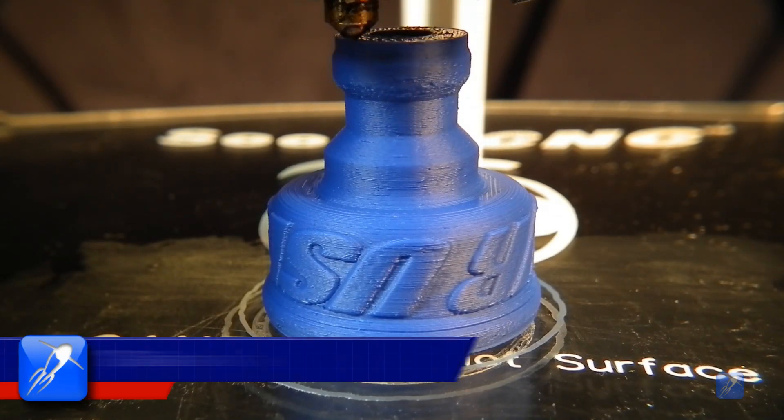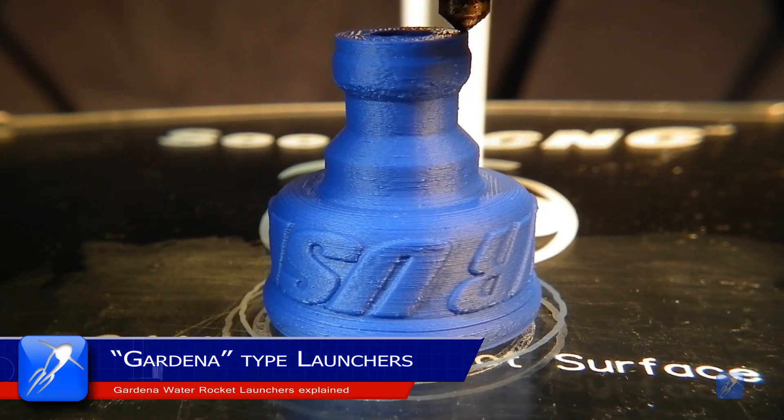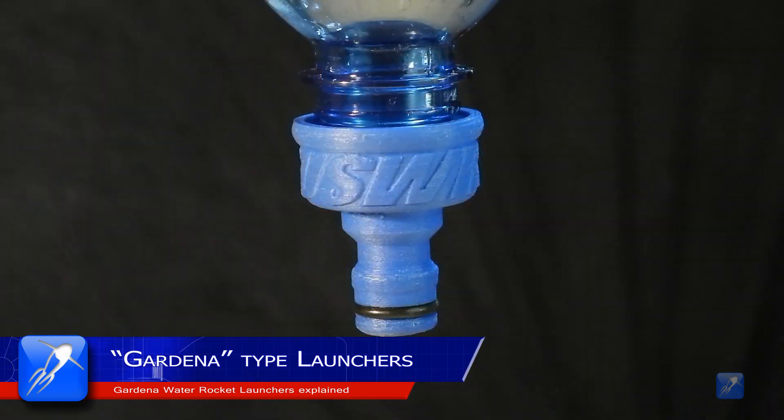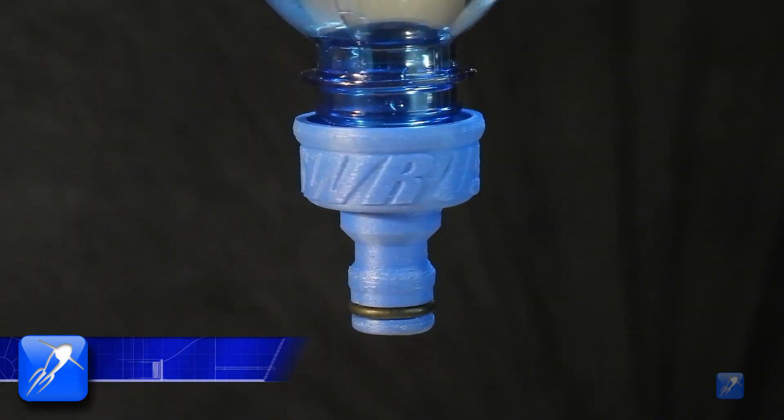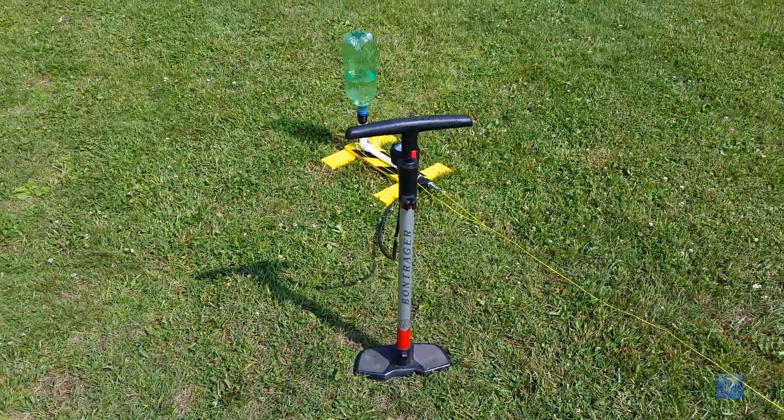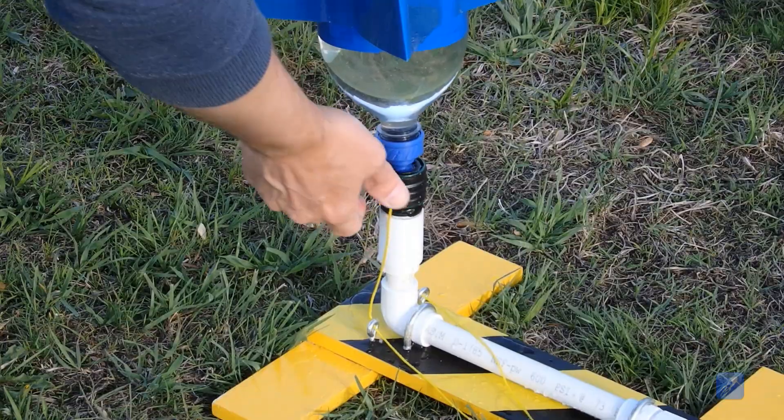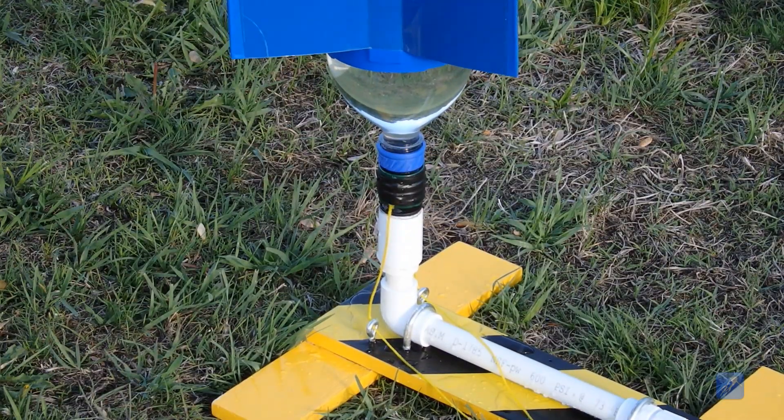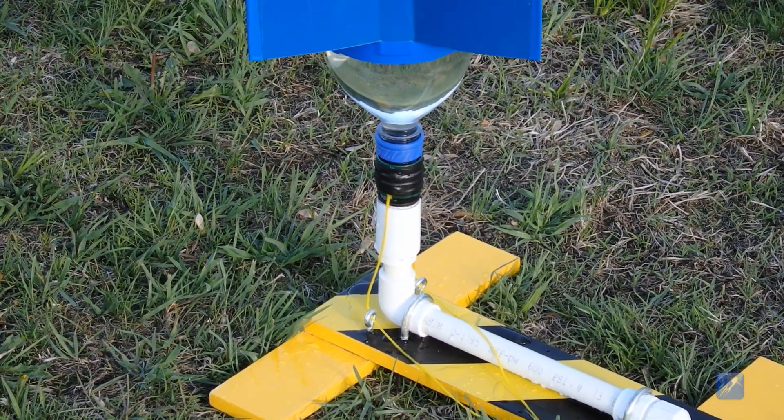A number of people who downloaded our 3D printed water rocket nozzles from Thingiverse have asked where they can purchase a suitable launcher for them. We decided to make this video to present a quick tutorial showing you how you can make a compatible water rocket launcher that uses a Gardner hose quick release connector for the release mechanism.